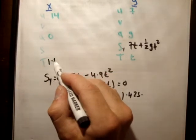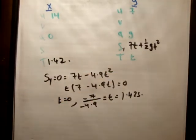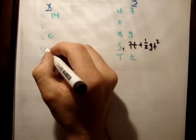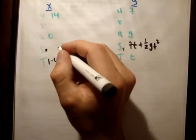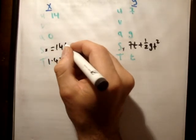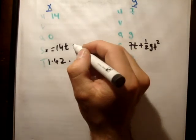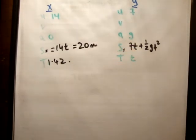So after 1.42 seconds, it's after reaching its maximum horizontal range. So the next thing we need to do is find out what that horizontal range is. So s_x is equal to ut plus 1/2 at squared is equal to 14t because the acceleration is 0. So it's 14 multiplied by 1.42, and that's equal to 20 meters. Is that correct? Yes, it is.